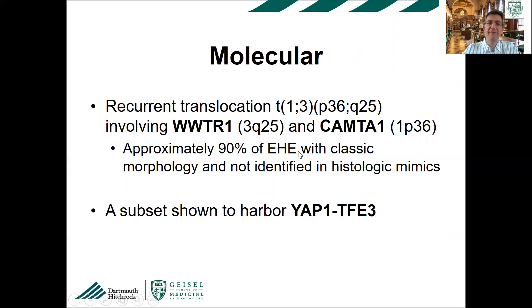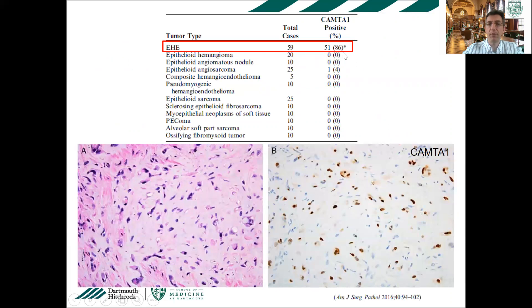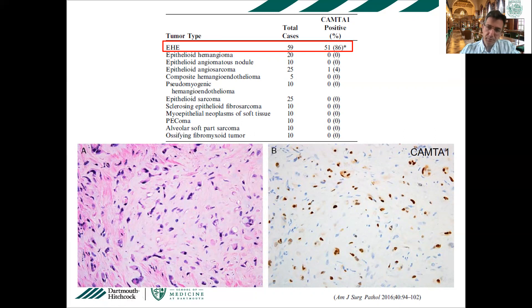The molecular pathogenesis of epithelioid hemangioendothelioma: the great majority have a recurrent WWTR1-CAMTA1 translocation, and a subset show YAP1-TFE3 rearrangement. There is now a very good immunohistochemical stain — CAMTA1 — which is helpful in diagnosing epithelioid hemangioendothelioma in the appropriate clinical and morphologic context. A large study from Boston showed 86% positivity. The few that were negative included some decalcified specimens. One epithelioid angiosarcoma was positive, but the authors think that was a misdiagnosis — probably a malignant epithelioid hemangioendothelioma with high-grade features.